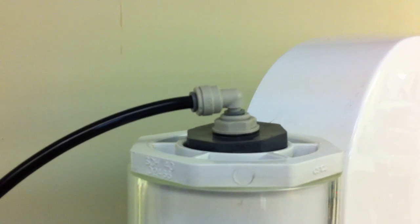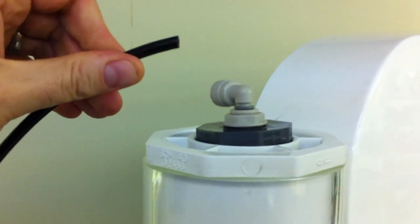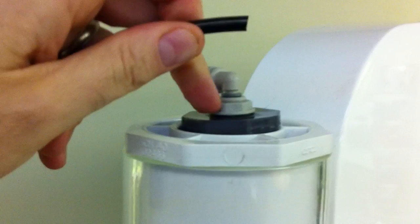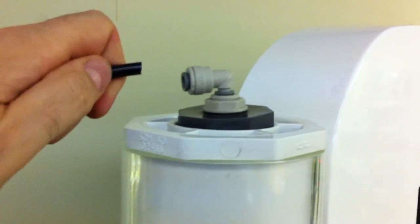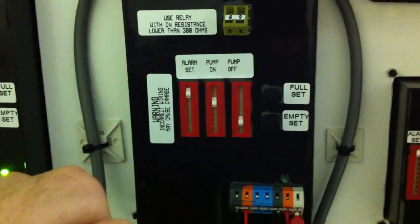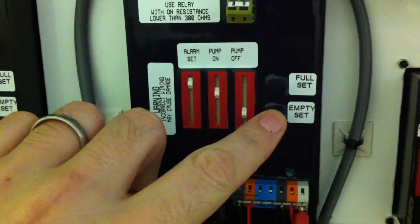To calibrate for empty, we can simply unplug the tubing to simulate empty, either from the top of the tank fitting or the tank sender, the SIM. Once empty is simulated, we come to the back of the panel and press the empty set button.